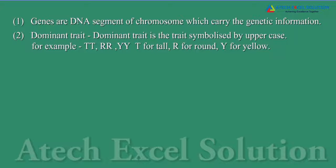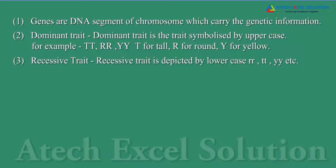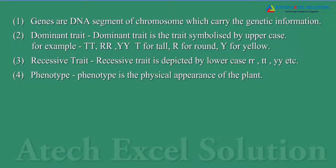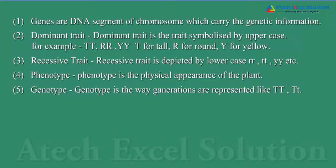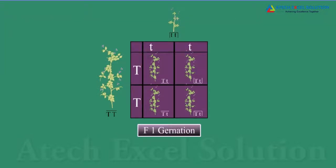Genes are DNA segments of a chromosome which carry the genetic information. Dominant trait is the trait symbolized by uppercase letters — for example, T for tall, R for round, Y for yellow. Recessive trait is depicted by lowercase letters — for example, rr, tt, yy. Phenotype is the physical appearance of the plant. Genotype is the way generations are represented, like uppercase TT and lowercase tt.